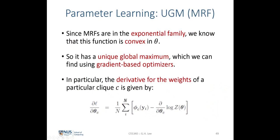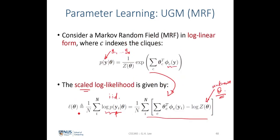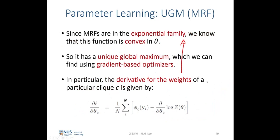Since MRFs are in the exponential family, this function is convex in theta, which means we have a unique global maximum we can find using a gradient-based optimizer. If we plot the cost function as a function of theta, with all possible values of theta on the x-axis, we would have a global maximum that we can find using a gradient-based optimizer.